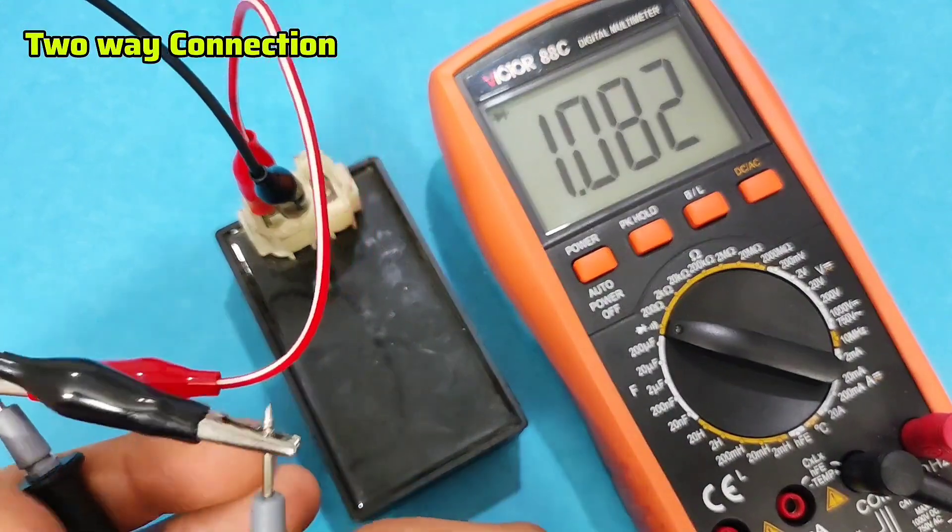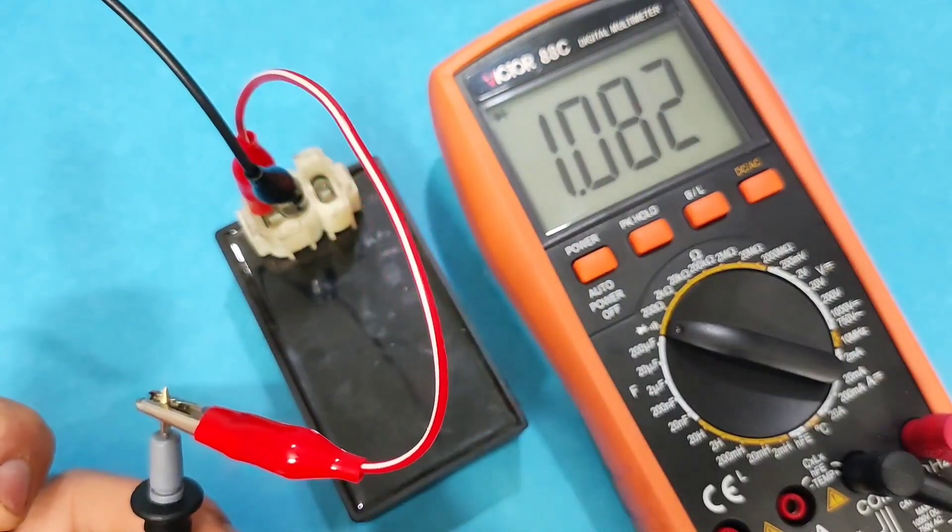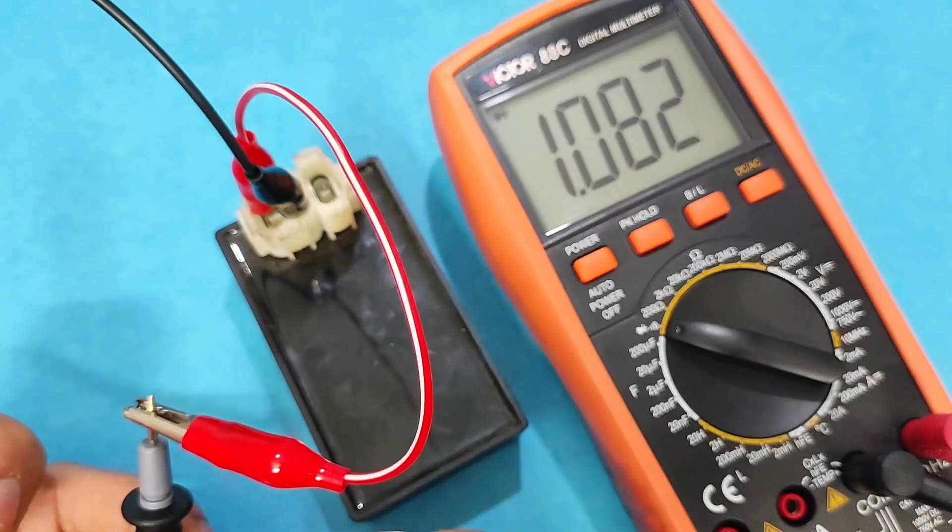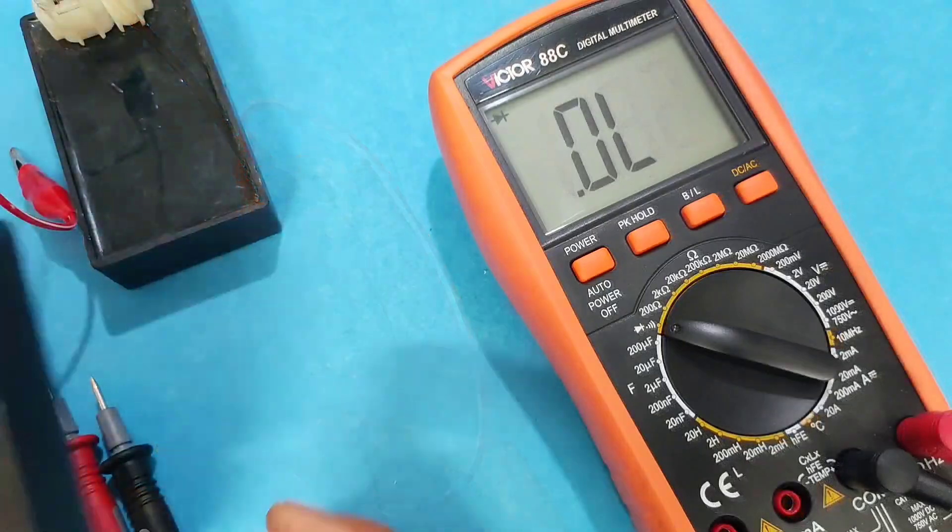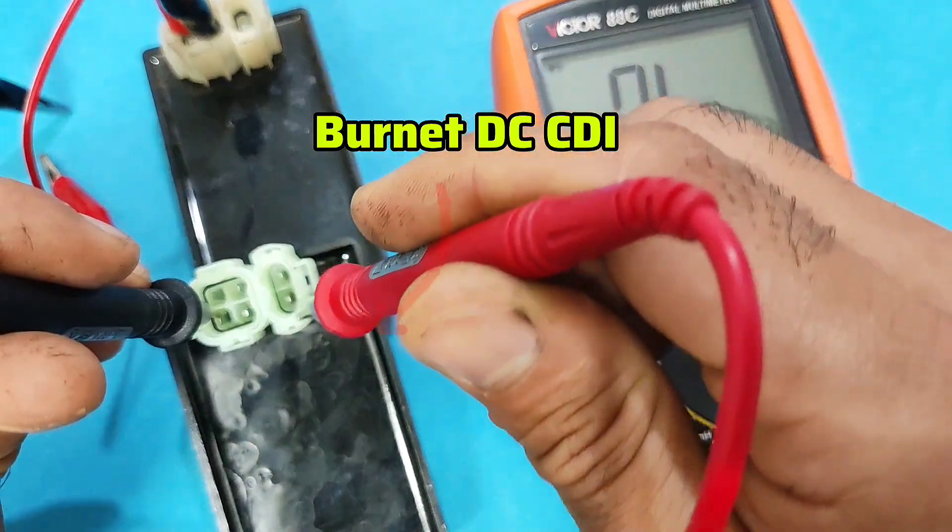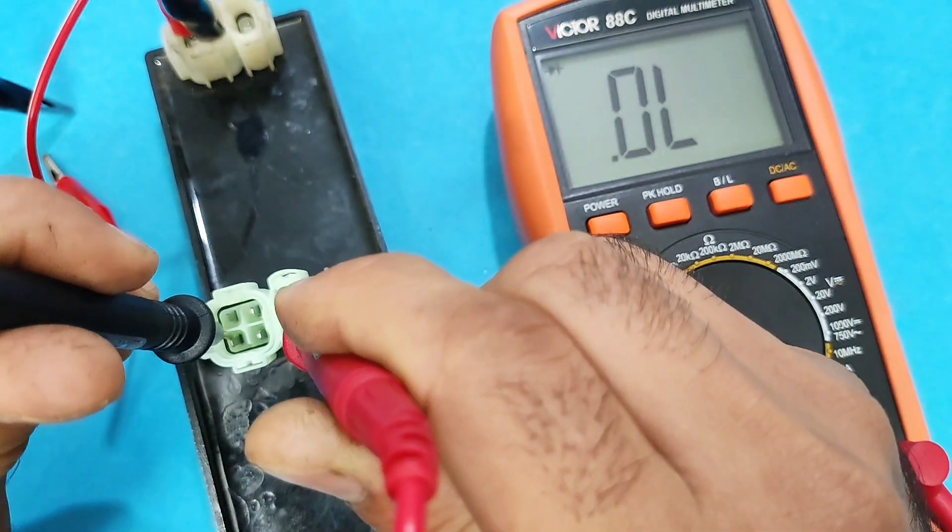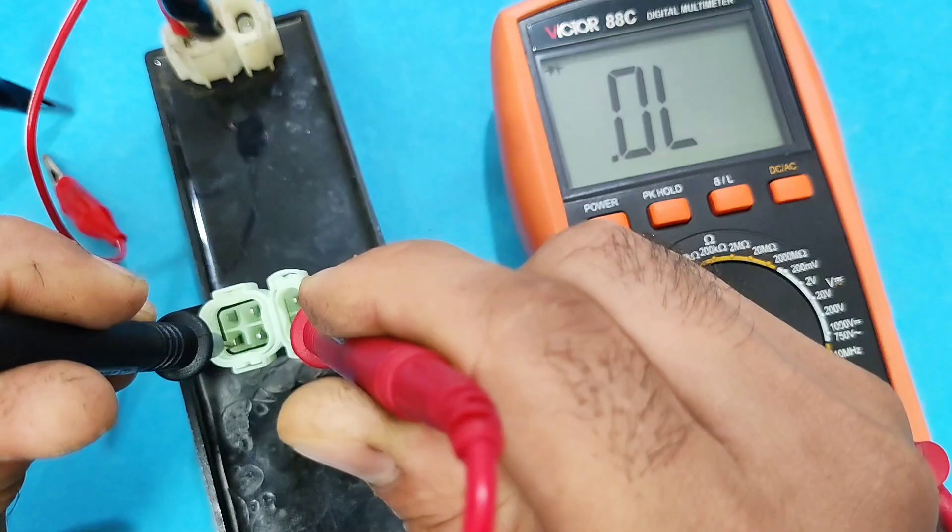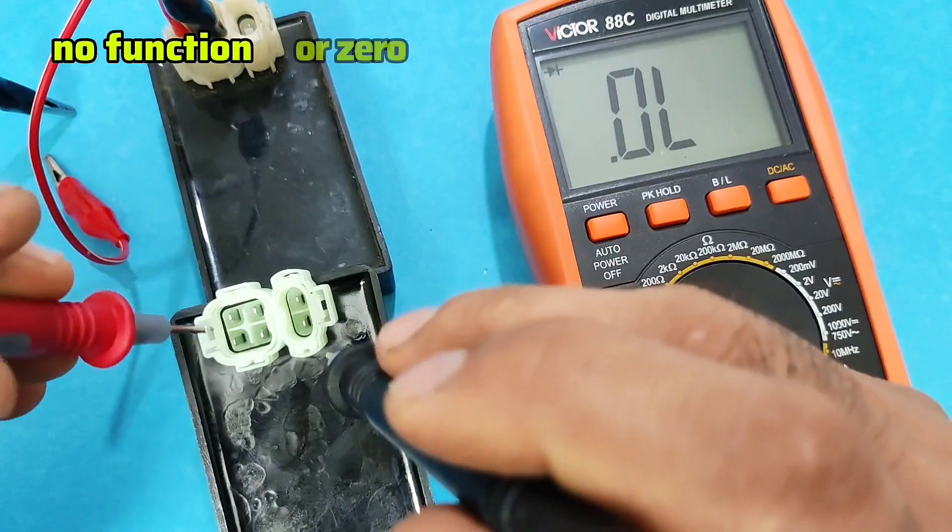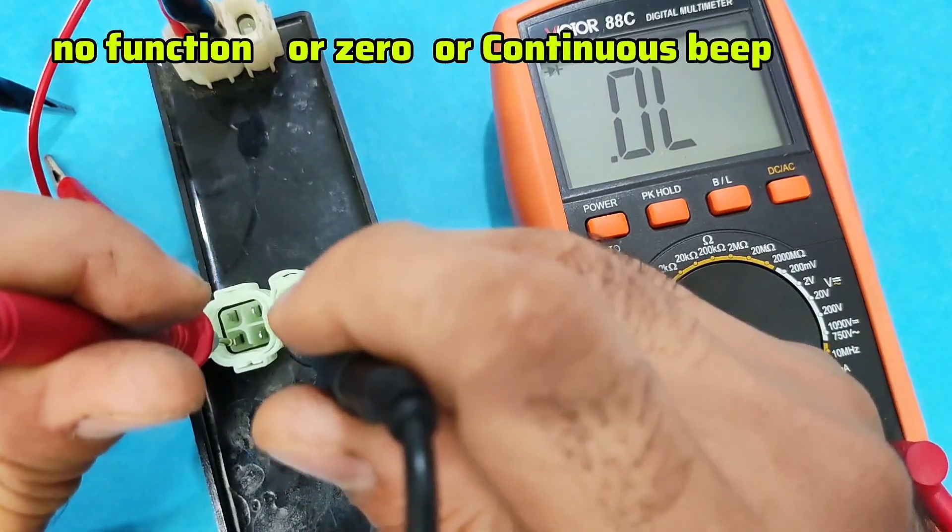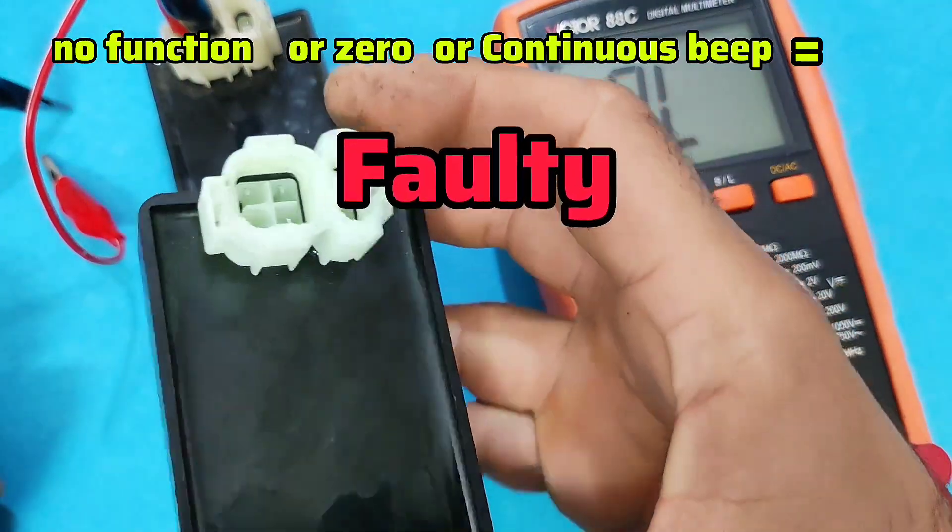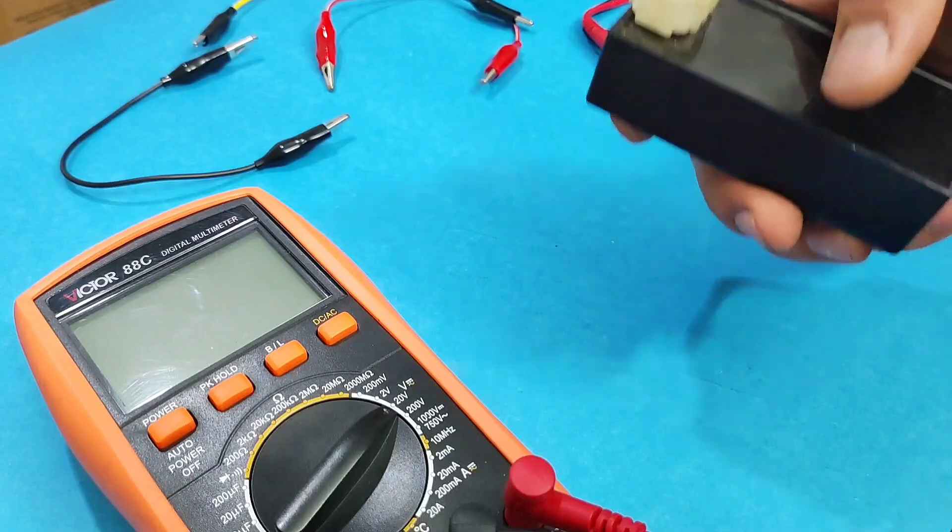Also the negative pin and pick-up pin show a resistance value. Set in diode mode, the buzzer, and check it. We have a resistance value. Switch the probes. The connection is two-way. If there is a continuous beep or it shows zero, this CDI is defective. Like this faulty CDI. Negative and power source. No function. Switch the probes. No function. This is faulty.